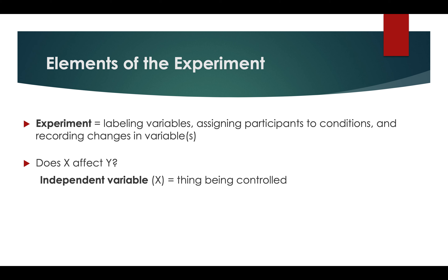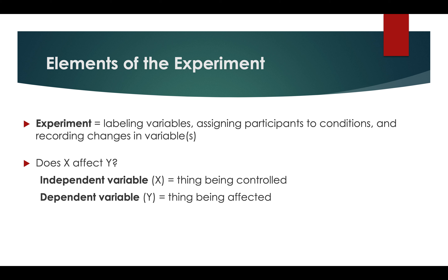The independent variable, or X, is the thing being controlled. For example, we can't really do an experiment on college success because we can't control how someone will do on their SAT. The dependent variable is the thing being affected. If we narrow our focus to whether an SAT prep class works, we assign some participants to not receive the prep class and others to receive it — the independent variable is enrollment in the prep class, and the dependent variable is their SAT score.